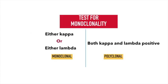You would also want to test for monoclonality — whether the plasma cells are monoclonal or polyclonal. Monoclonal cells, which are malignant, would be positive for either kappa or lambda, since they are monoclonal and the plasma cells would only secrete either one of them. If they are positive for both kappa and lambda, that means they are polyclonal.